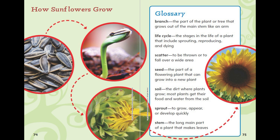Life Cycle: the stages in the life of a plant that includes sprouting, reproducing and dying. Scatter: to be thrown or to fall over a wide area.